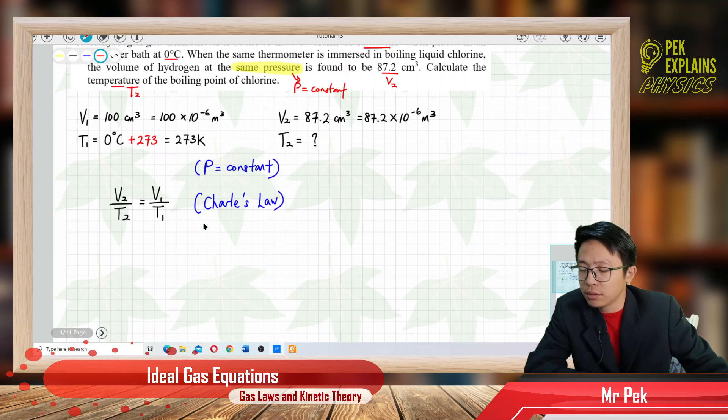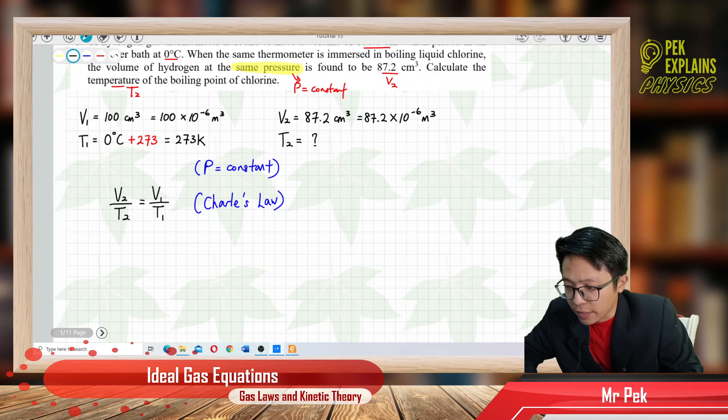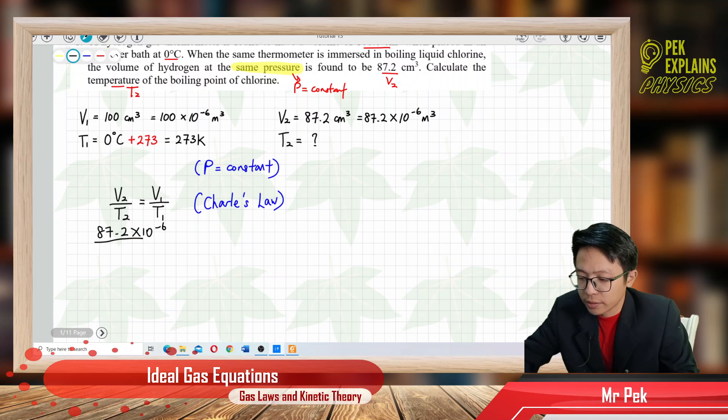Let us substitute the information. Volume 2 is 87.2 × 10⁻⁶, already in SI unit. We want to find T₂. Volume 1 is 100 × 10⁻⁶, and temperature 1 is 273.